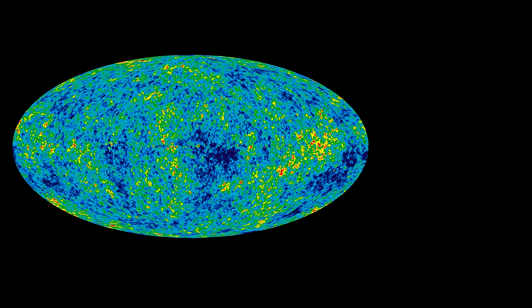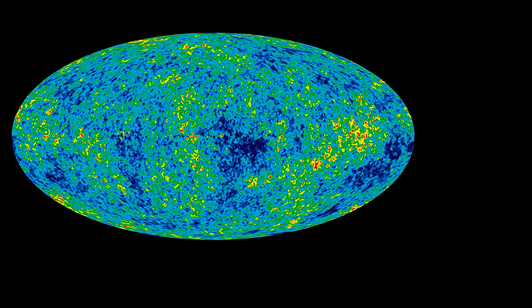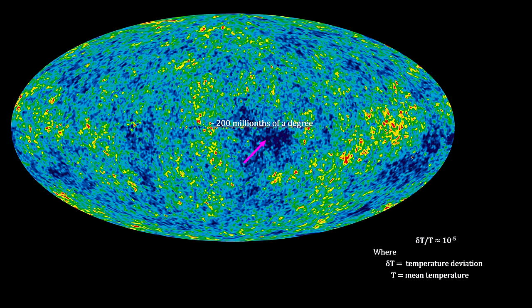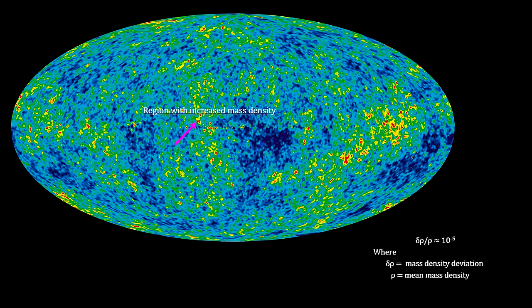The Planck satellite measurements detected small amounts of temperature deviation. The image uses color to show variations from the average with blue for minus 200 millionths of a degree through green and yellow to red, which represents plus 200 millionths of a degree. That temperature deviation comes to one part in 100,000. These temperature deviations come from equally small mass density deviations in the plasma at the time of decoupling.